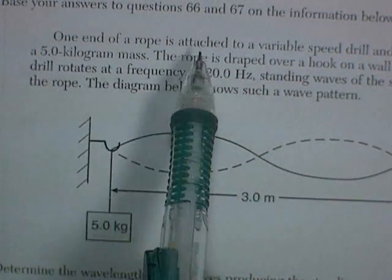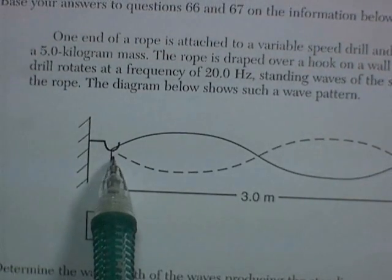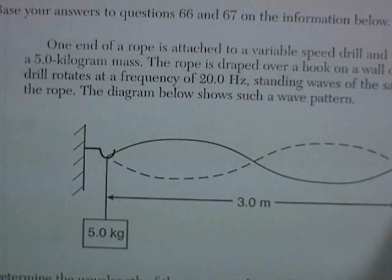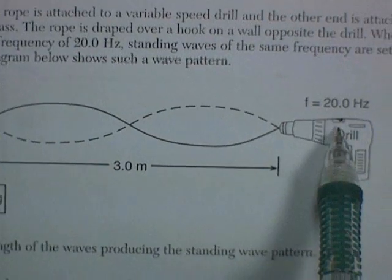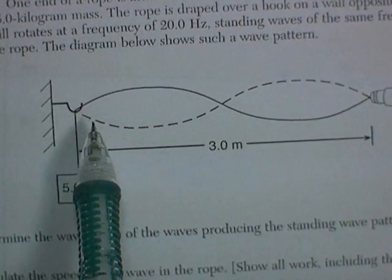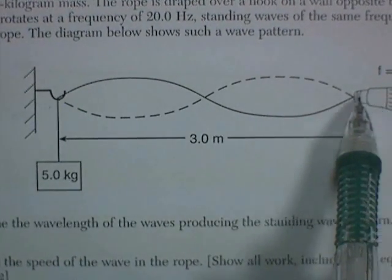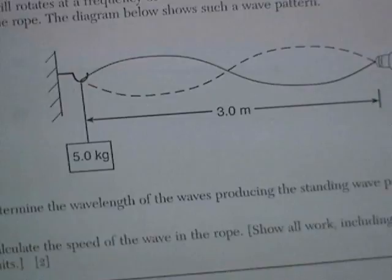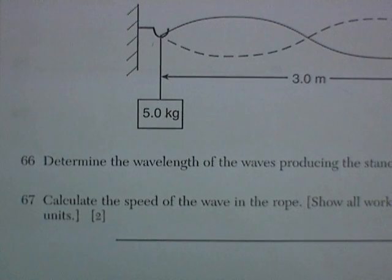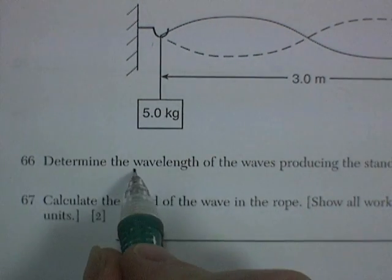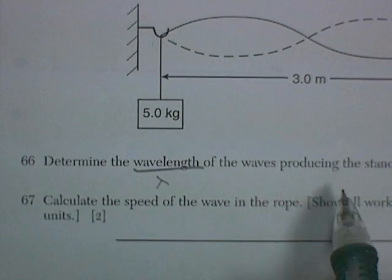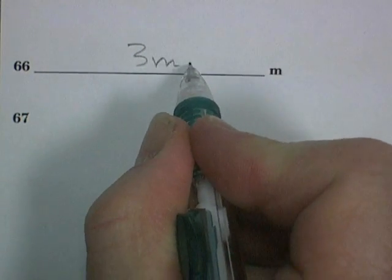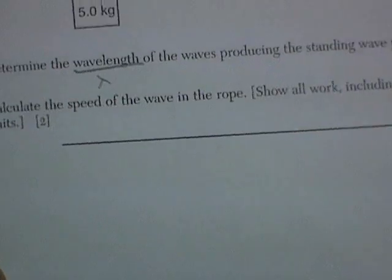We've got a rope. It's attached to weight to produce tension. It's sort of draped over a hook. You've got a drill that's turning at 20 hertz of frequency. And it's producing a standing wave. And it looks like 3 meters is the length of that standing wave. So let's read question 66. Determine the wavelength producing the standing wave for one point. Well, that's going to be 3 meters.